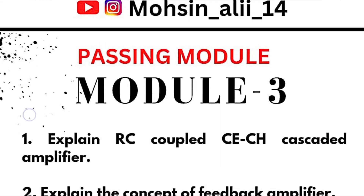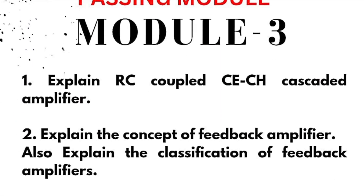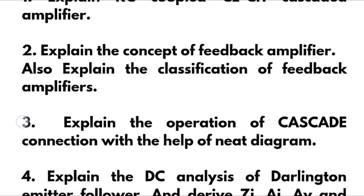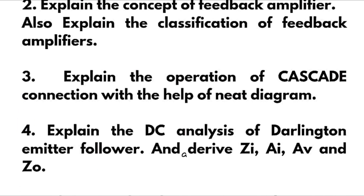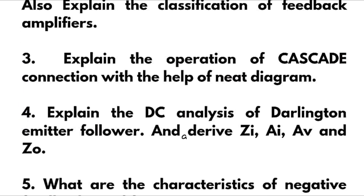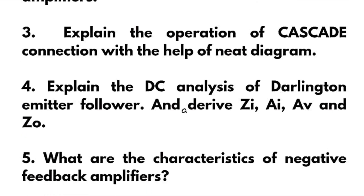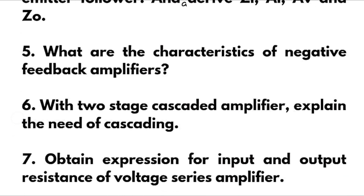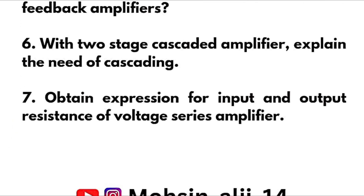The next passing module is module 3, where we have: explain RC coupled cascaded amplifier and explain the concept of feedback amplifier, also explain the classification of feedback amplifiers. Explain the operation of cascade connection with the help of a neat diagram — again super important. Explain the DC analysis of Darlington emitter follower and derive ZI, AV, and ZO. What are the characteristics of negative feedback amplifiers? With a two-stage cascaded amplifier, explain the need of cascading — super important. Obtain the expression for input and output resistance of a voltage series amplifier.